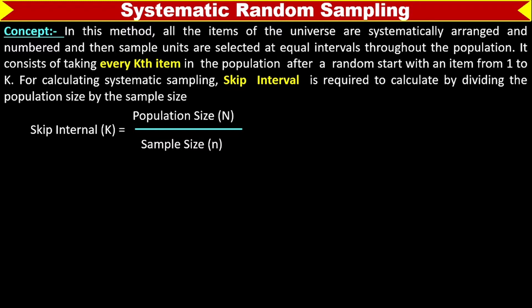For calculating systematic sampling, skip interval is required, calculated by dividing the population size by the sample size. Skip interval formula is population size N over sample size n.